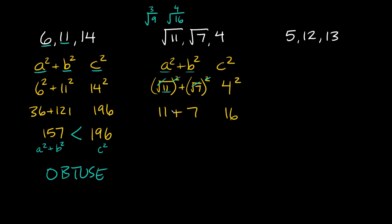So here we get 11 plus 7, which is 18, compared to 16. Since 18 is bigger than 16, a squared plus b squared is greater than c squared — so this one is an acute triangle.